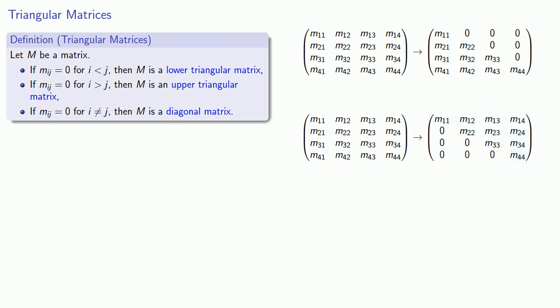And finally, as a special case, if our entries of the matrix are 0 any time i is not equal to j, then M is a diagonal matrix. And that's because any of the entries that are not along the main diagonal are going to be 0.